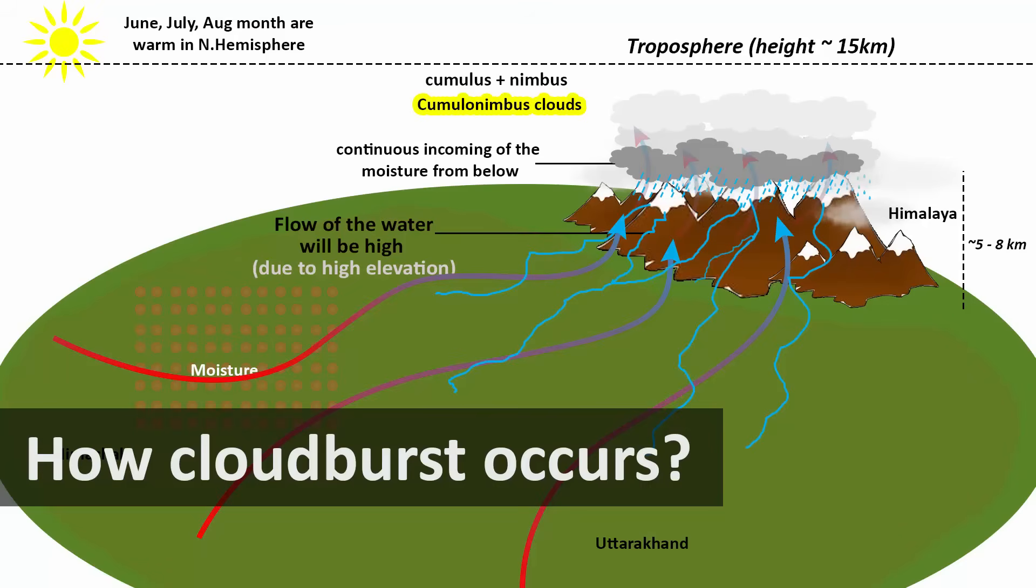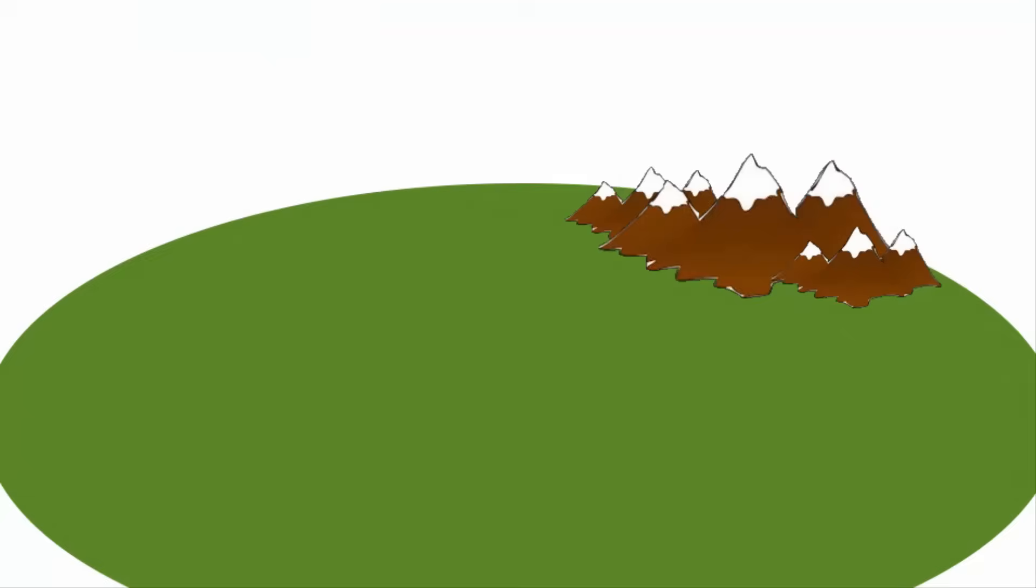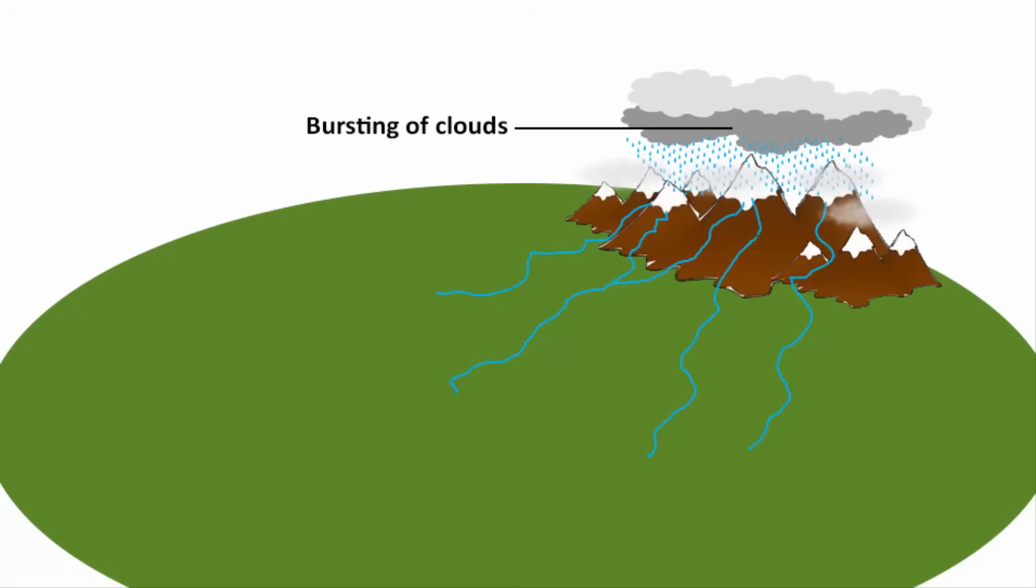In this video, we will learn how a cloudburst occurs. You have to understand that a cloudburst usually occurs near a hilly region. Why? Because mountains are the only landform that are closer to clouds. And cloudburst basically means bursting of a cloud. If a cloud bursts near a mountainous region, then the impact is much higher compared to any plain area.